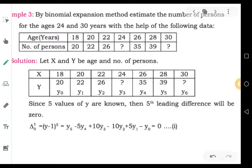By binomial expansion method, estimate the number of persons for the ages 24 and 30 years with the help of the following data.